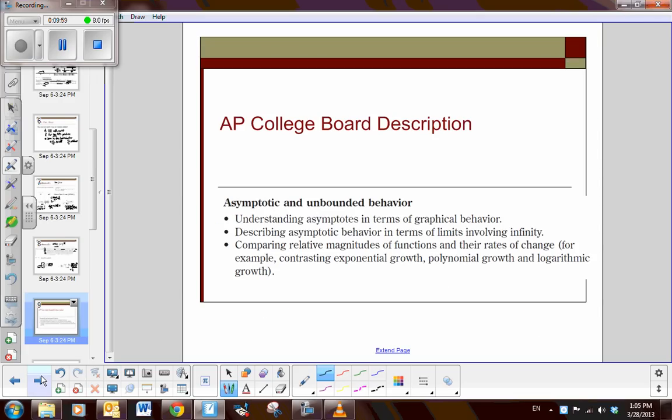Now, just as a summary, we've covered limits as the AP board describes, and then the AP board also requires that you do have an understanding of asymptotes and unbounded behavior. So we just reviewed understanding horizontal and vertical asymptotes, and you can describe the asymptotes in terms of the limits involving infinity. And then we can compare the relative magnitude, the size, the largeness of the functions and their rates of change. Good. Now make sure you answer the Google form and that you've taken notes on all of this video. See you guys after spring break. Enjoy yourself.